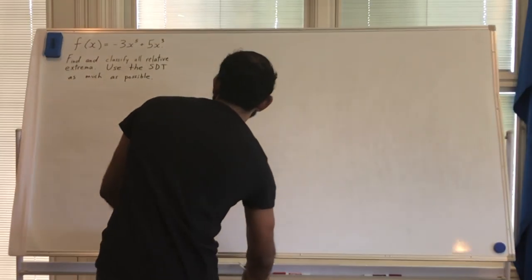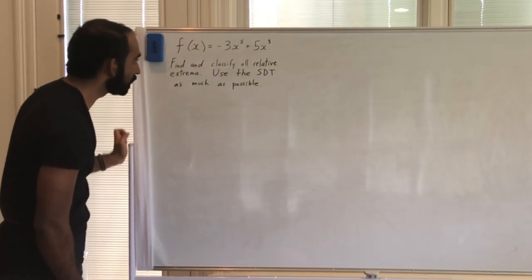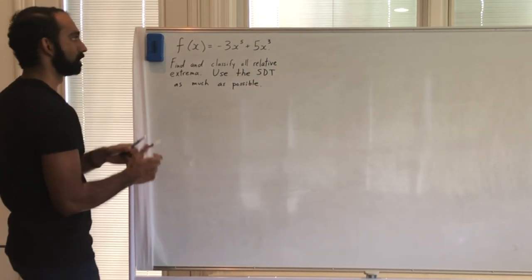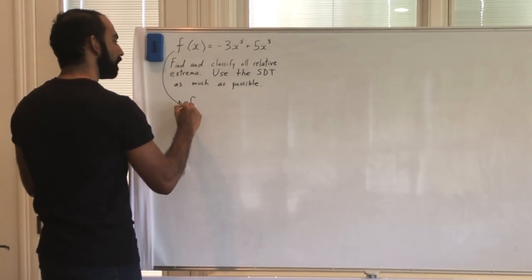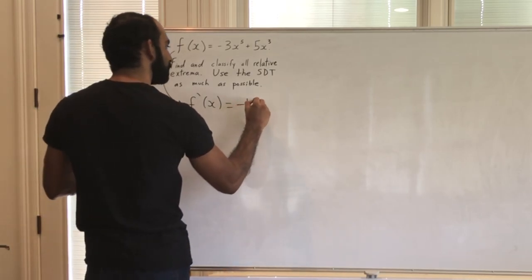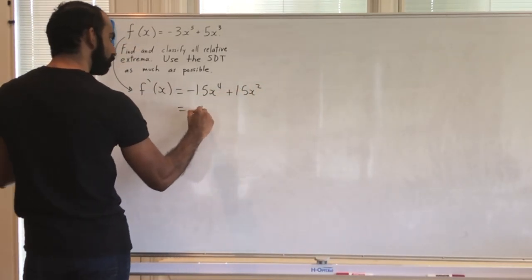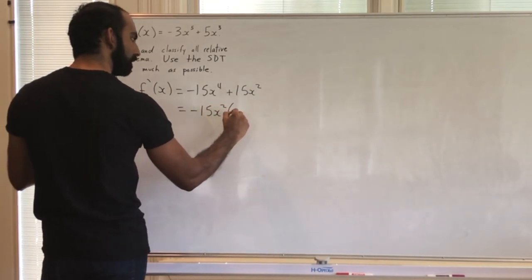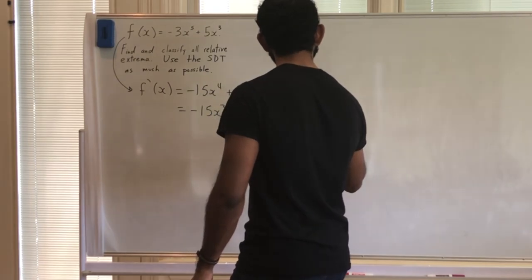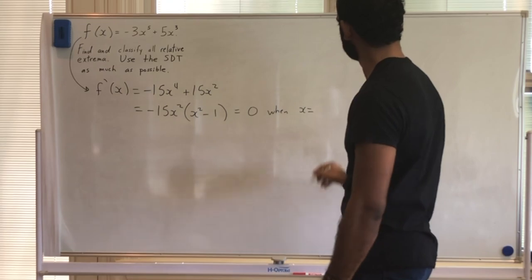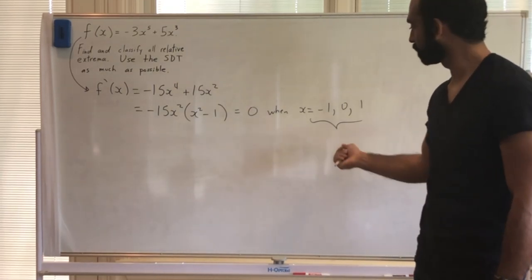Here's a problem illustrating just that. I want to find and classify all relative extrema using the SDT as much as possible. First, I need critical values. Let's find f prime: when I differentiate, f prime is going to be negative 15x to the fourth plus 15x squared. I can factor out negative 15x squared, leaving x squared minus one. Setting this equal to zero gives critical numbers at x equals negative one, zero, and positive one.